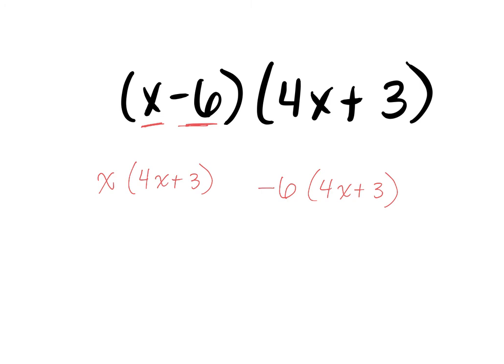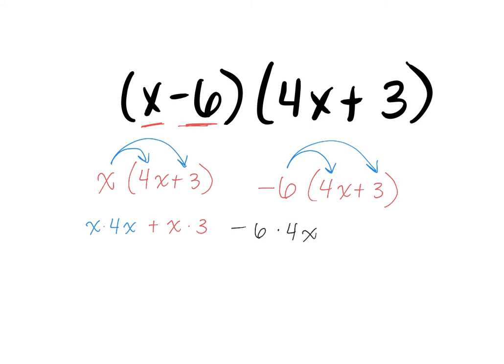Who remembers what I do next? Nicole? Very good — let's distribute. How do I distribute, Nicole? Good, and the other one. Excellent. So this is going to be x times 4x, plus x times 3, minus 6 times 4x, minus 6 times 3. Alright, what's that first term going to become?